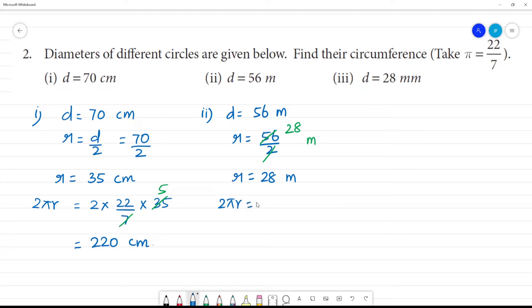2πr is equal to 2 into 22 by 7 into 28. Now, we have to cancel. 1, 7 is 7. 4, 7 is 28. That is equal to 44 into 4. Whenever we have 4, 4 is 16. 11 meter. 16 remainder 1. 4, 4 is 16 plus 1 is 17. 176 meter. Clear?